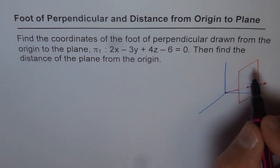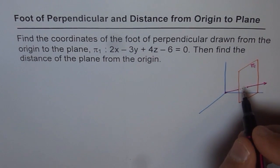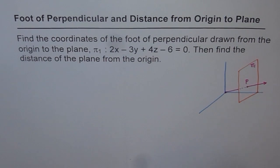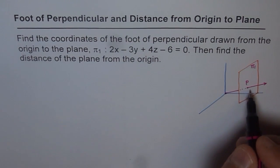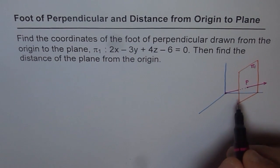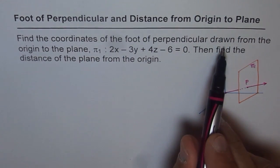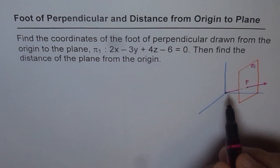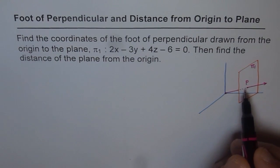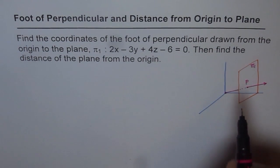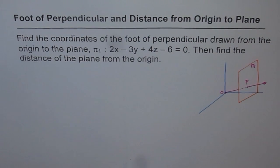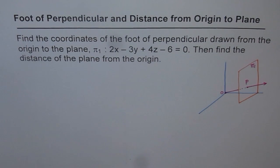This is our plane π₁, and in this plane we want to find point P where the normal to the plane passes through the origin. That gives us the shortest distance from origin to the plane. Once we find P, the foot of the perpendicular, we will also be able to find the distance.